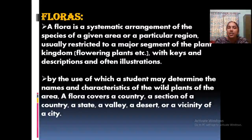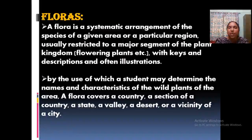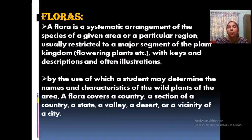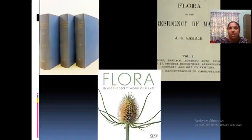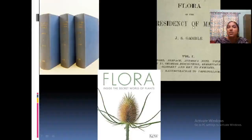A particular region, locality, or country has its own flora. One example is the Flora of Kandu District, Flora of the Presidency of Madras, Flora of Patanadeta, etc. By use of a flora, a student can easily identify a plant, its characteristic features, and everything. For example, the Flora of the Presidency of Madras by J.S. Gamble is available in three volumes — volume 1, 2, and 3 — and is available in our library.